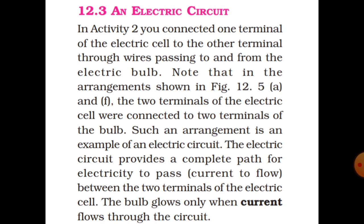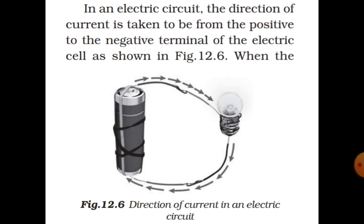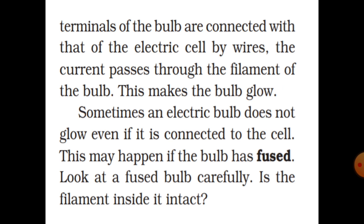The bulb glows only when current flows through the circuit. In an electric circuit, the direction of current is taken to be from the positive to the negative terminal of the electric cell, as shown in the figure. When the terminals of the bulb are connected to those of the electric cell by wire, the current passes through the filament of the bulb, making the bulb glow.